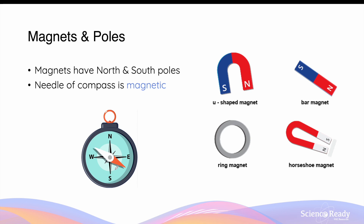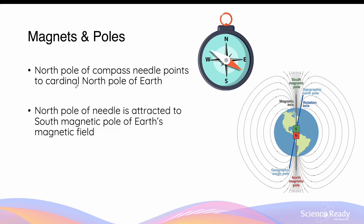A common application of magnets is in a compass, where the needle is made of a magnetic material. We define the poles as north and south because the north pole of the compass needle points towards the cardinal north of Earth. This is because Earth is actually a giant magnet — its geographic north pole is actually its south magnetic pole, which attracts the north pole of the compass needle, giving us the direction towards true north.